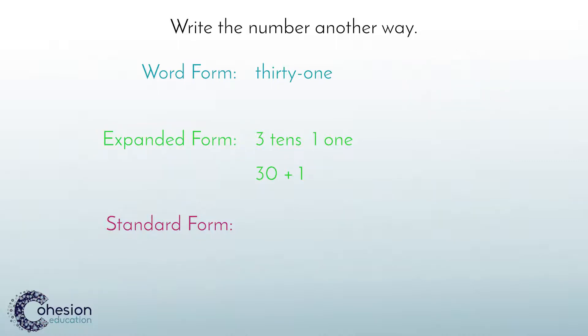Another way the students could represent the number 31 in word form differently is by writing the number in standard form. Thirty-one in standard form is written as 31. That is how students represent two-digit numbers in different ways.